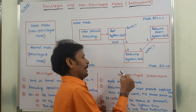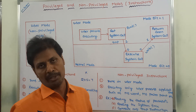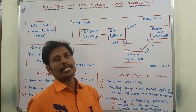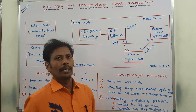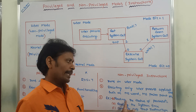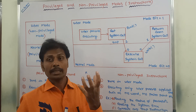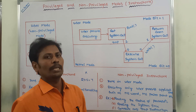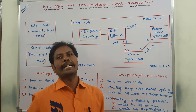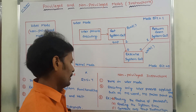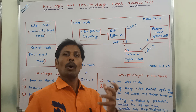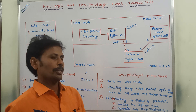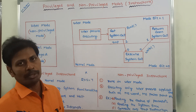What are the examples for non-privileged instructions? Reading the status of the processor — that means reading the status of the CPU, what are the status bits of the CPU — is a non-privileged instruction. Reading the system time — whatever the time that is there in the system, to read that system time, we have to use a non-privileged instruction.